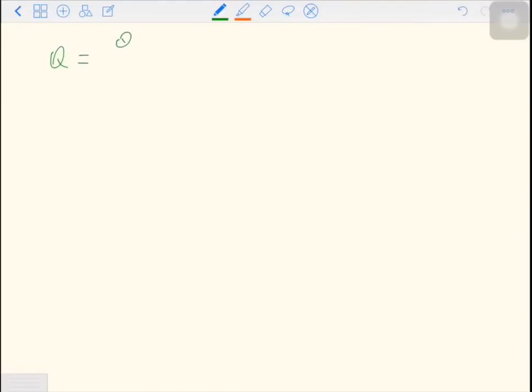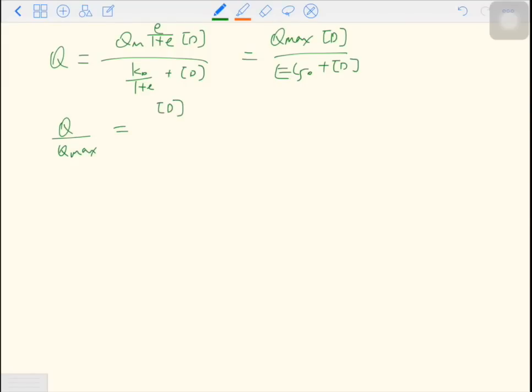So let's rewrite this model again. Q equals Qm times E over 1 plus E, times D over Kd times 1 plus E plus D. And Qm times E over 1 plus E is Qmax, times D over EC50 plus D. So if we move Qmax to the left, we have Q over Qmax, which is the fractional response, equals D over EC50 plus D. And this is between 0 and 1.